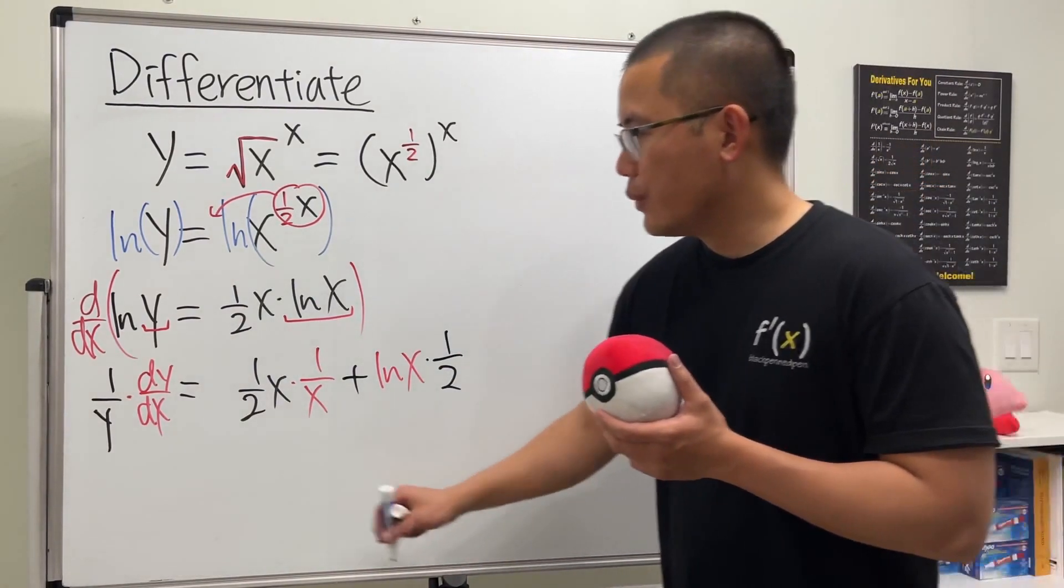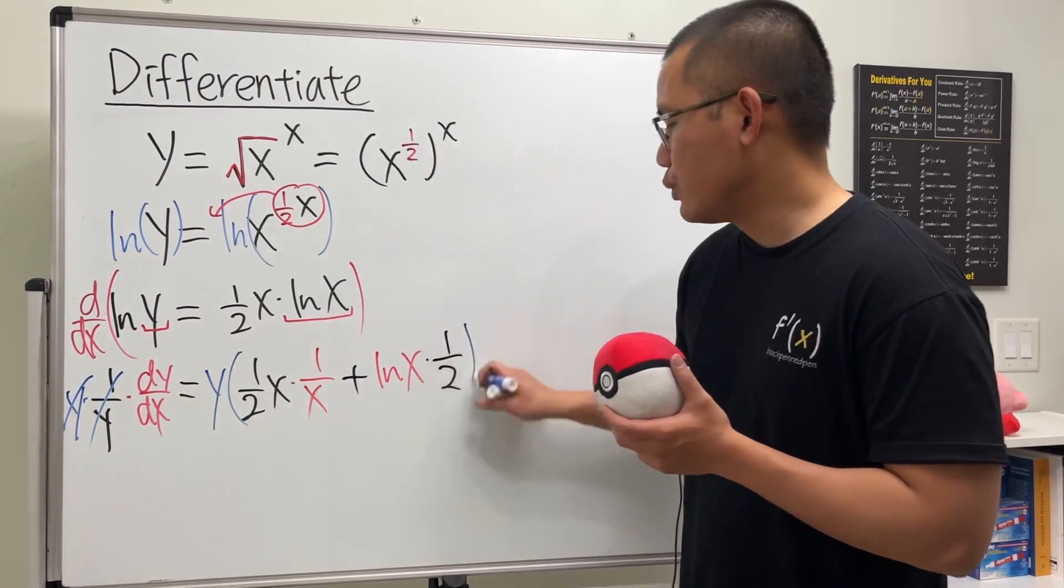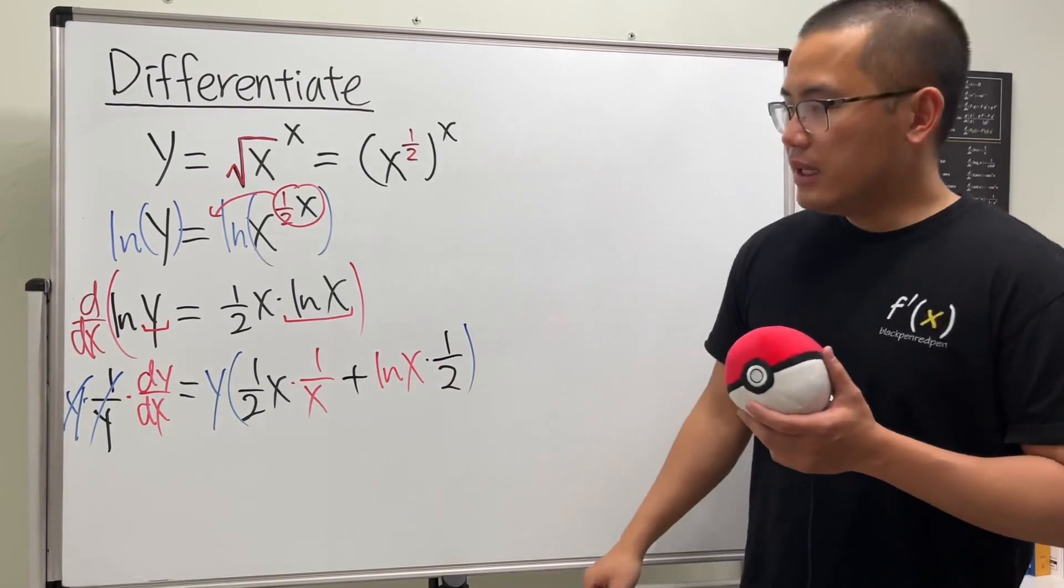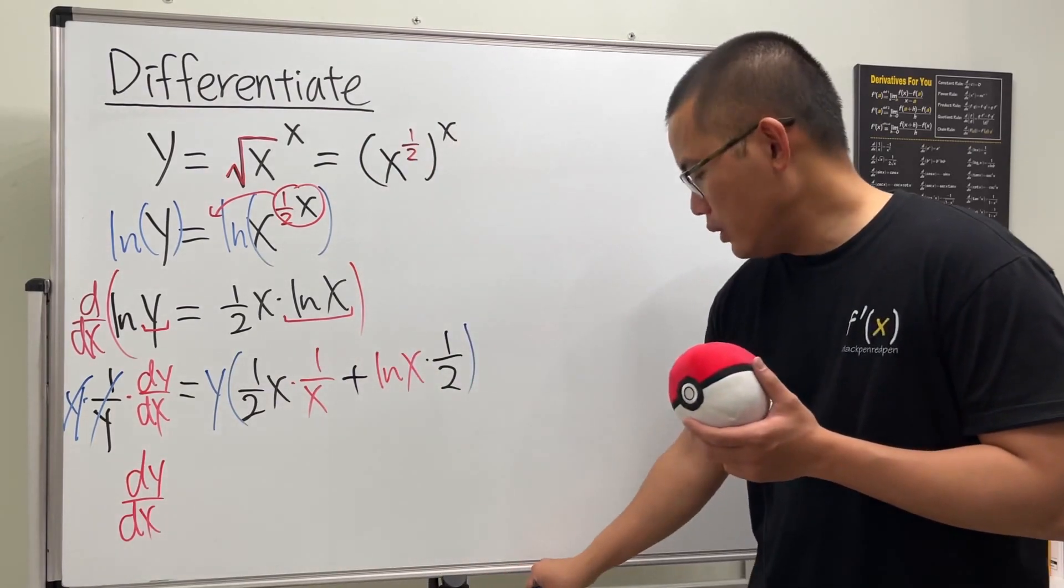As usual, we can just multiply y here so they cancel. Likewise, we do it on the right hand side as well. Ladies and gentlemen, the dy dx is going to be equal to...